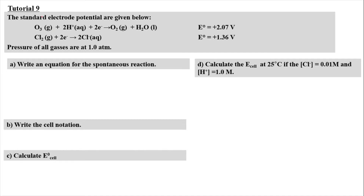For tutorial question 9, the standard electrode potentials are given as below. Ozone in the electrolyte of hydrogen ions will be accepting 2 electrons to form oxygen gas and water, with the E° value of positive 2.07. Meanwhile, for chlorine, chlorine gas will accept 2 moles of electrons to form 2 chloride aqueous ions, giving an E° value of positive 1.36 volts. The pressure of all gases here is given as 1 atm.